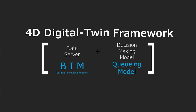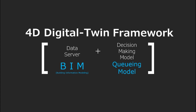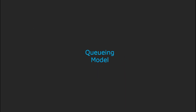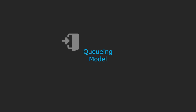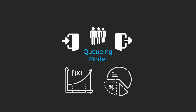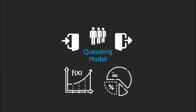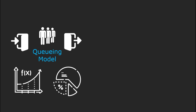The functions of the digital twin include monitoring the construction site, analyzing the condition of the construction process, and supporting decision making. To support these functions, a queuing model is applied. Queuing models enable mathematical analysis of a series of processes arriving in the queue, waiting, and being serviced, and are useful for checking the performance of the system.